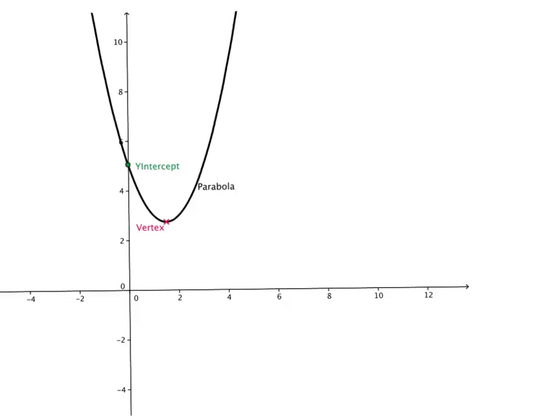Every value that we plug in for x, our y's, or our function values, will be above the x-axis. They'll be positive. So we can write here that there are no real x-intercepts.